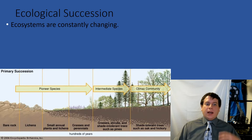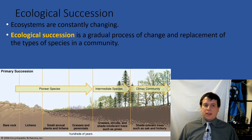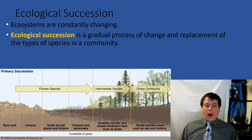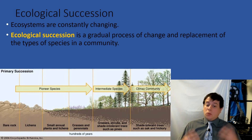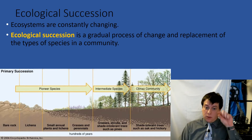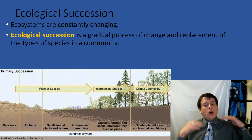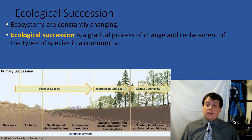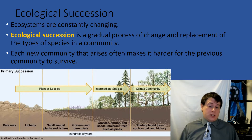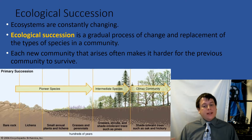Ecological succession is studied as a way that we look at ecosystems because they're constantly changing. It's a gradual process of change and replacement in the types of species in a community. You may start out with just some grasses, then maybe some shrubs, and eventually they'll grow to bigger and bigger trees. It's not just those trees that are growing, but the organisms that are going to live there, because larger trees can support more species of birds and all kinds of things. So what you get is a constant change of the entire ecosystem. As a new community arises, it oftentimes will push out some of the other species.